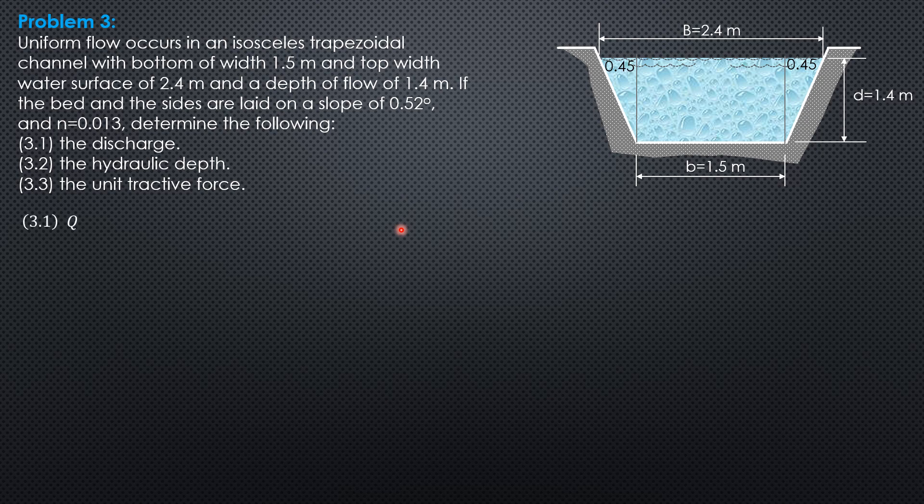So the discharge, Q equals area times V, area over n times hydraulic radius to the 2/3, S to the 1/2. The area is 1/2 of quantity 2.4 plus 1.5 times 1.4. So area is 2.73 square meters.